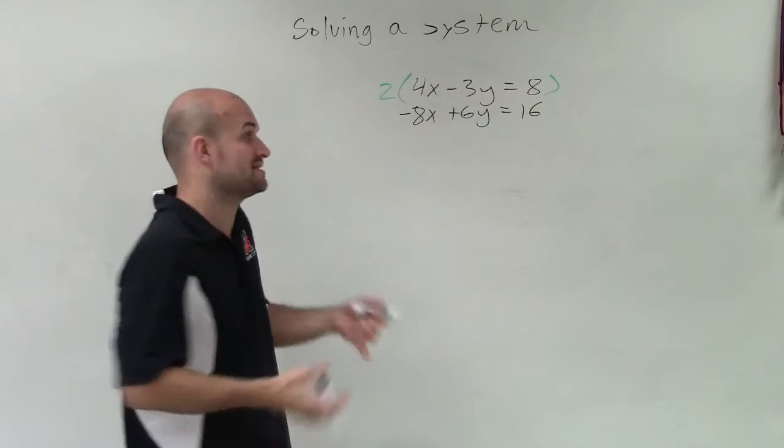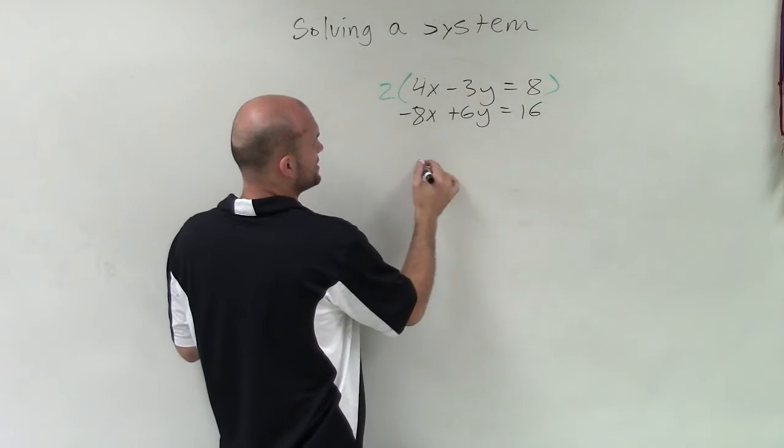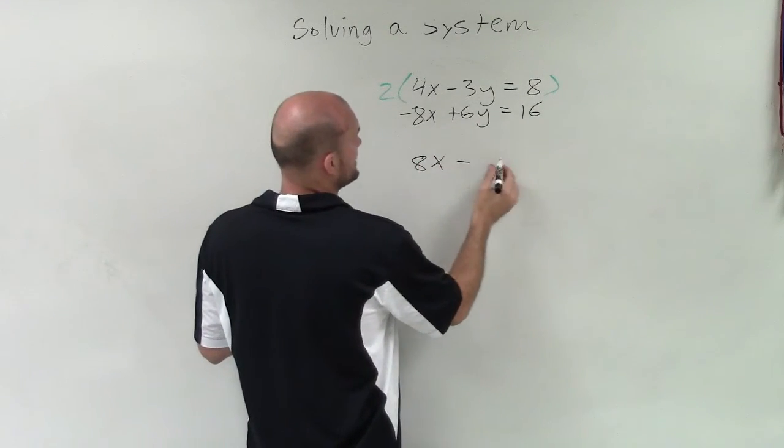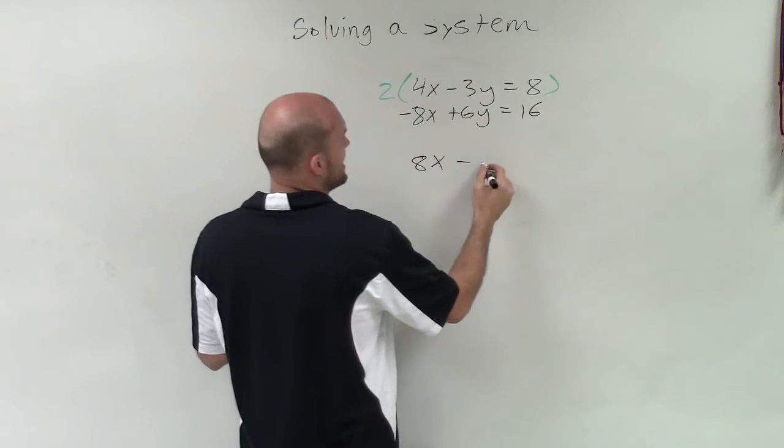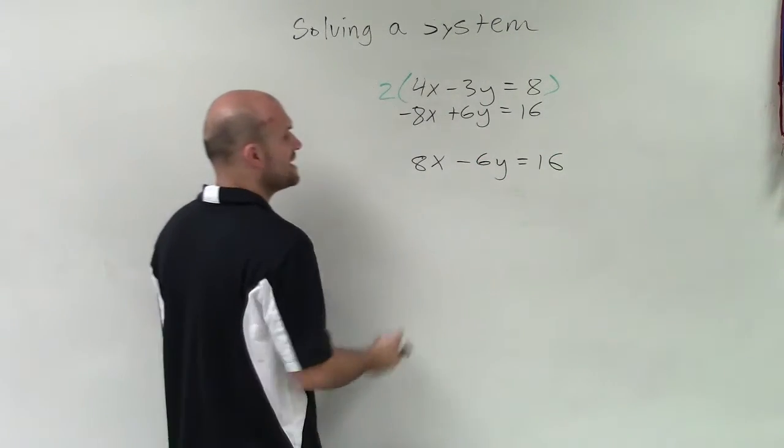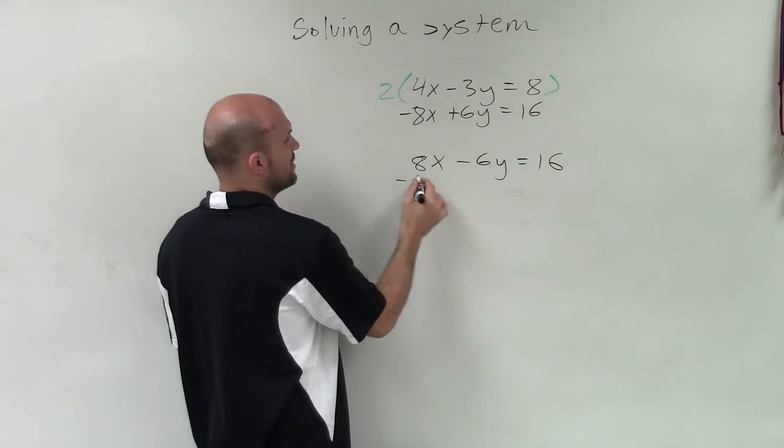Now, we only need one of them to be the same, but in this case, we actually are going to end up with both of them being the same, but they will have opposite signs, which is OK, because when they have opposite signs, that just means we add the two equations.